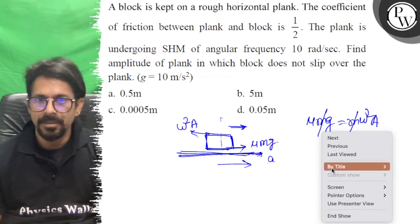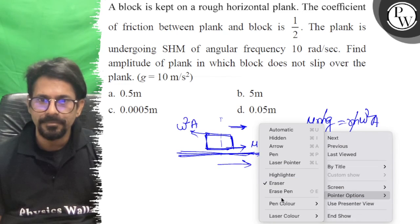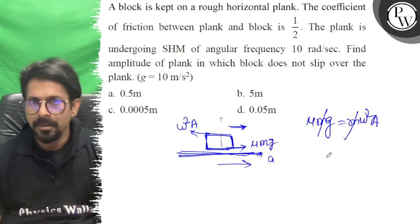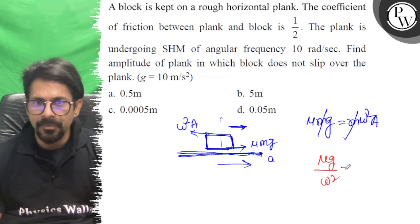So A becomes μG over omega squared. This is A.